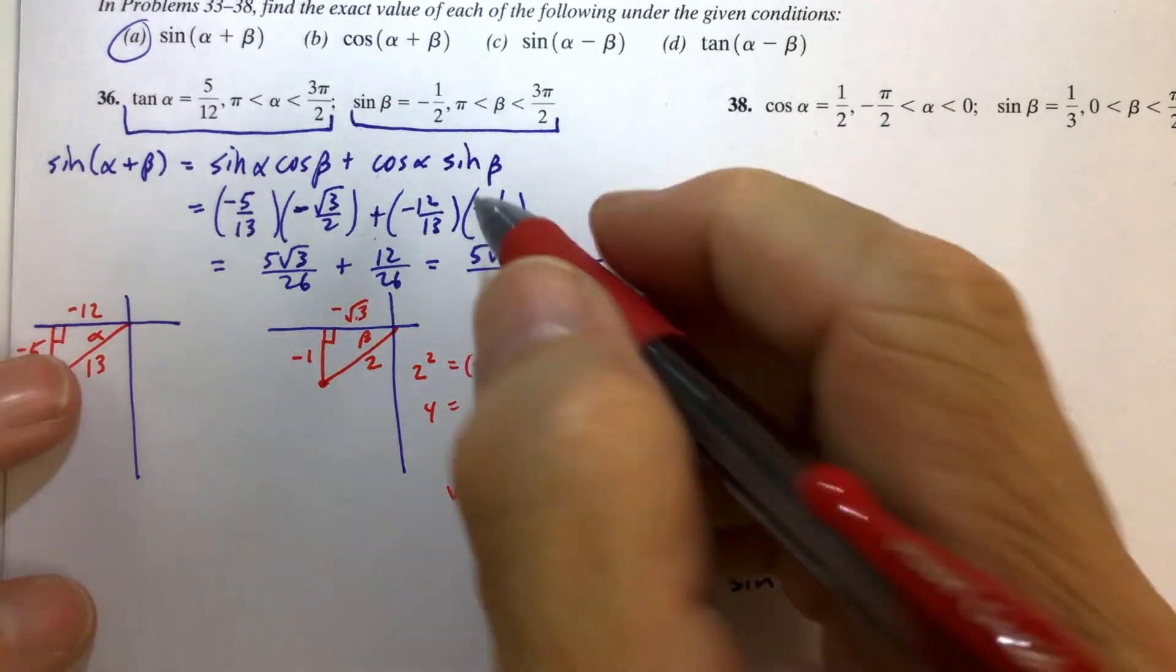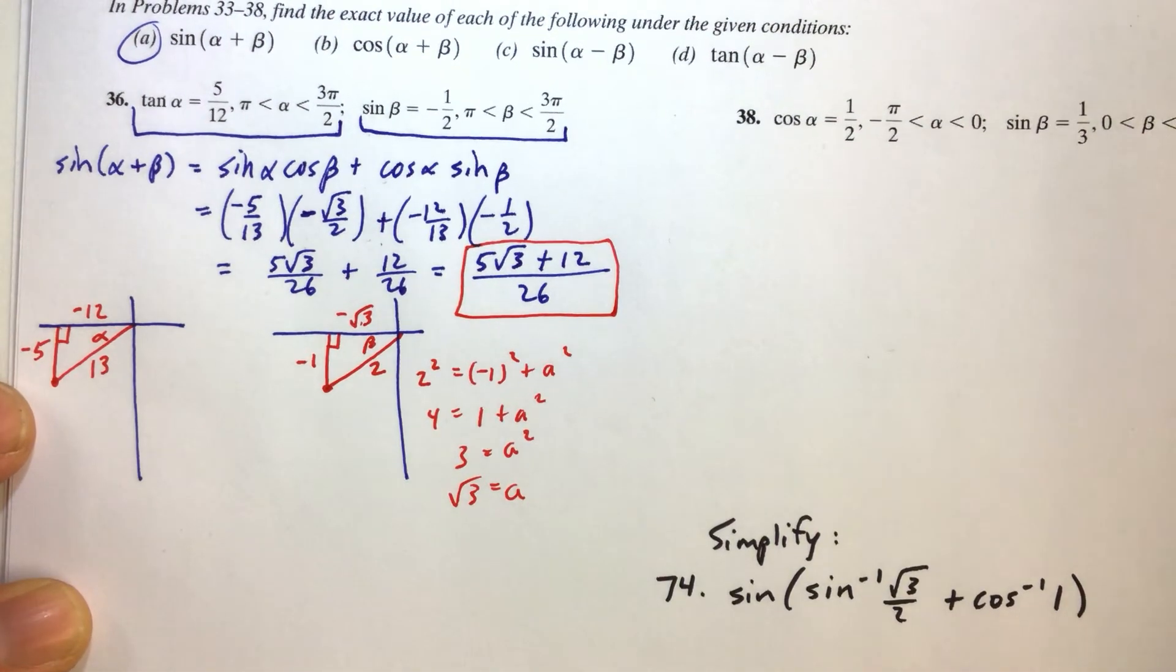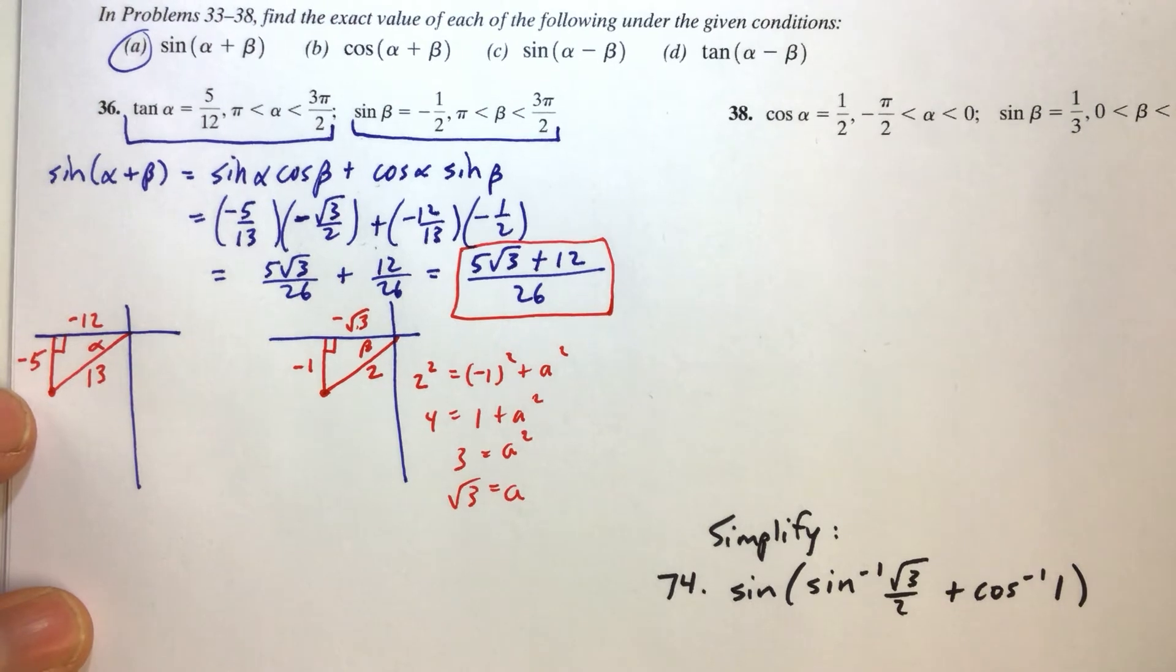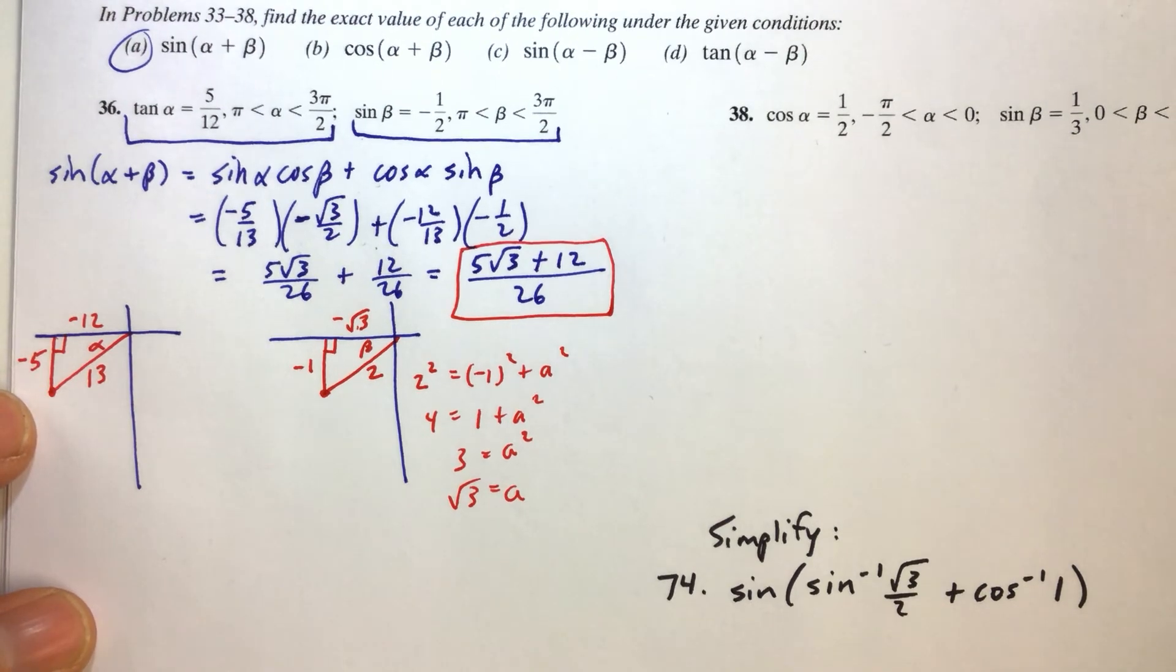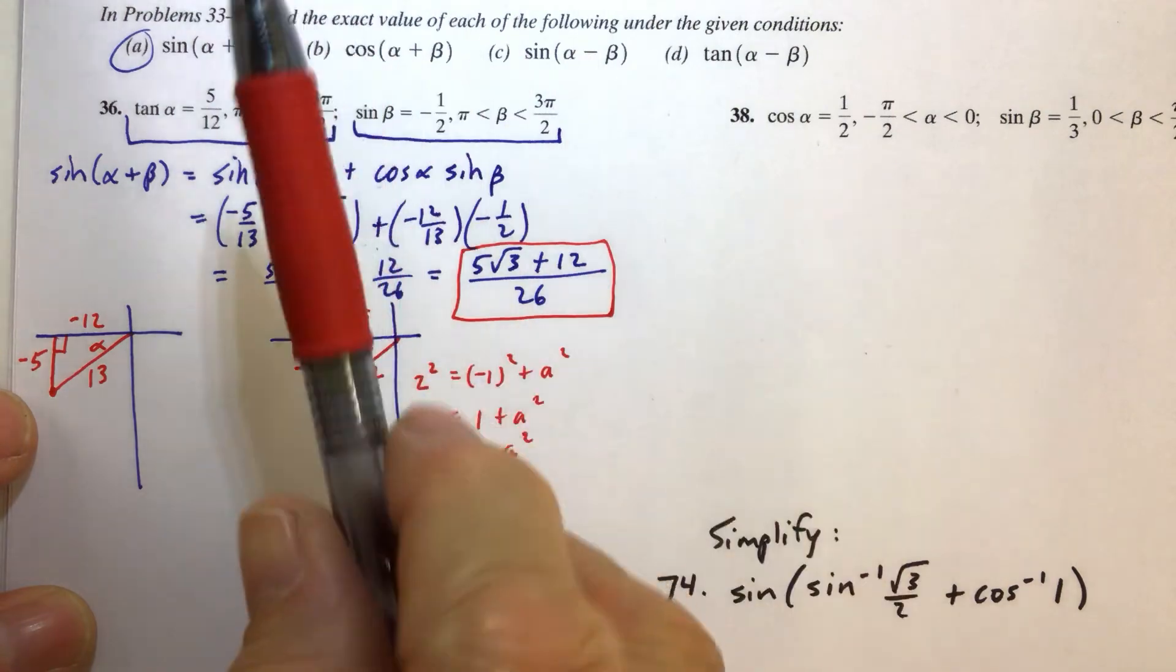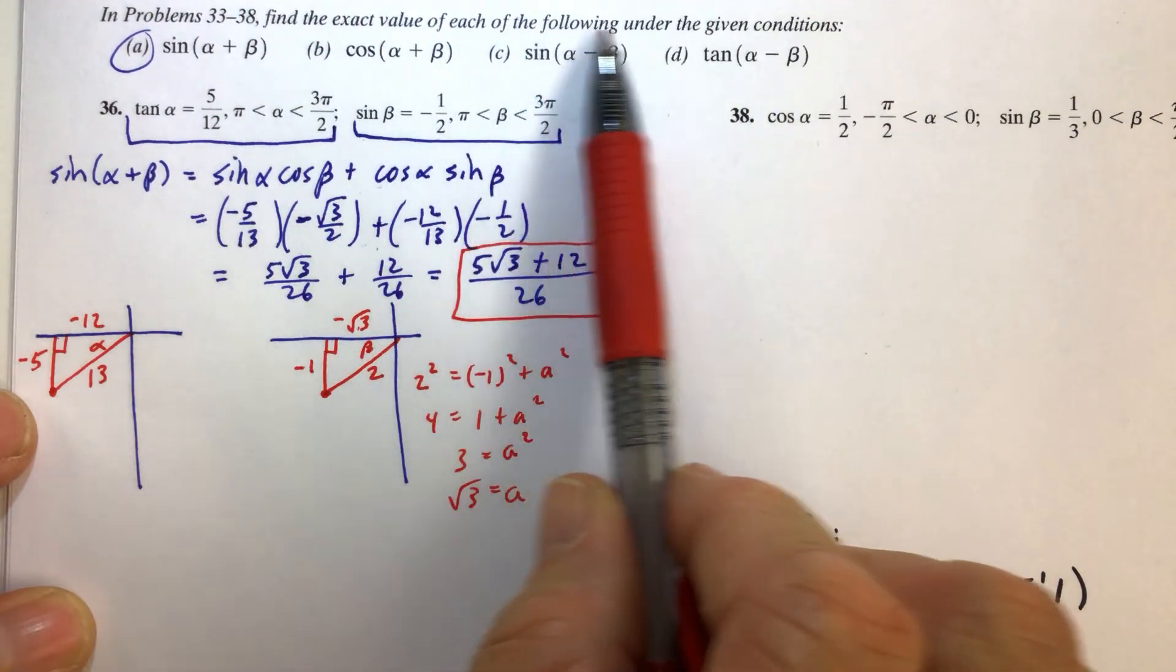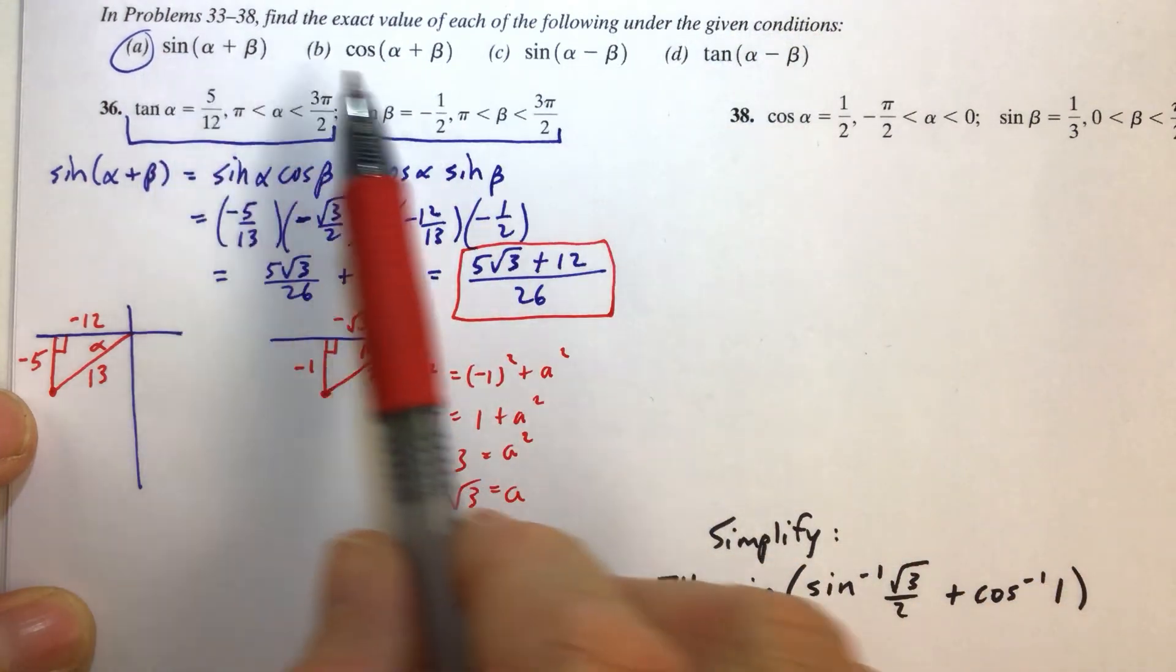It's kind of fun problems that put a lot of the different concepts that we've been learning all together into one problem. So that's how you do number 36. It is exactly how you do number 38 also. So, noticing that for problems 33 through 38, it says find the exact value of each of the following under the given conditions.